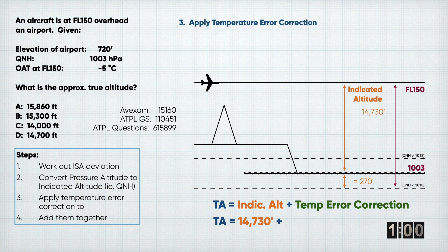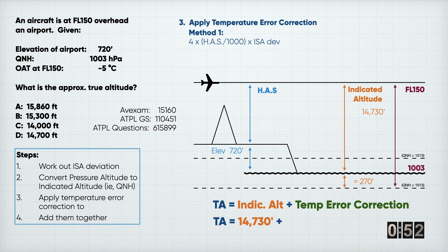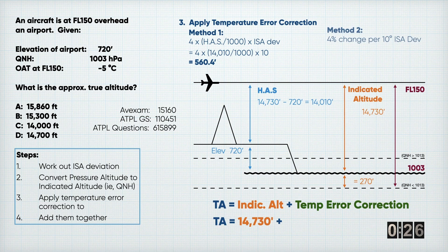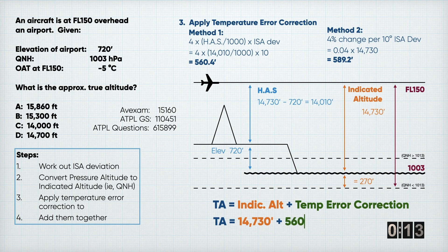Moving on to the next step: working out our temperature error correction. I said there are two methods, and I'm going to show you how to do both. The first method says we need to work out what our height above the surface is. We've got an elevation of 720 feet and an indicated altitude of 14,730 feet, so one minus the other gives us a height above the surface of 14,010 feet. Using our temperature error correction formula, we come out with 560. The second temperature error correction formula is the 4% rule — 4% per 10 degrees over or under the ISA expected temperature. We are actually 10 degrees over, so we're looking for 4%, which gives us 589 point something feet. I'm going to go with the first number because I prefer that method. So we take 560, plug that into our true altitude formula, and we come out with 15,290 feet as our true altitude.